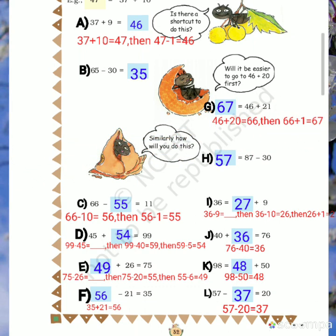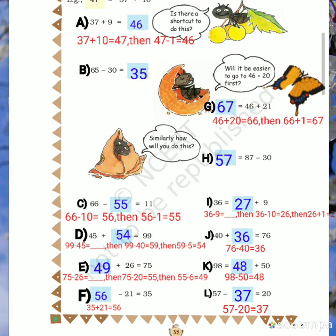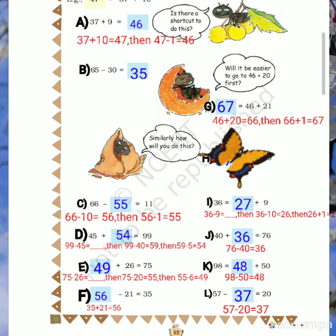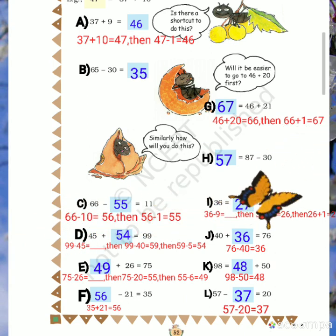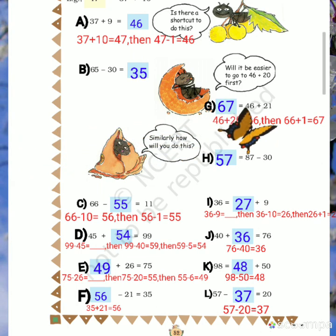D: 45 plus dash equals 99. How much do you add to 45 to get 99? For this, subtract 45 from 99. To subtract, first subtract 40 from 99, then subtract 5 more. You will get the answer.